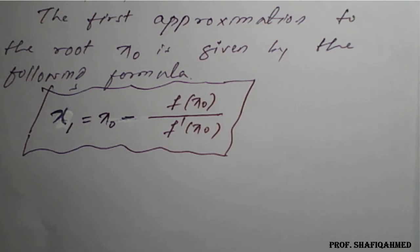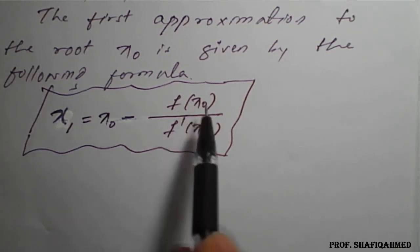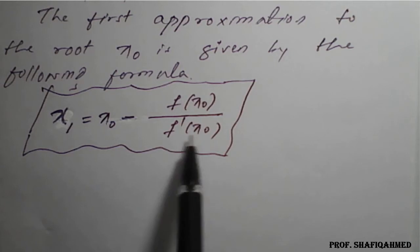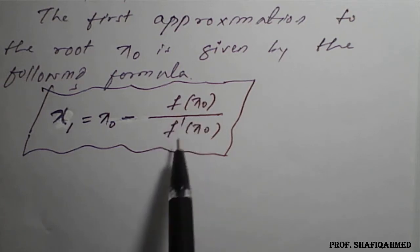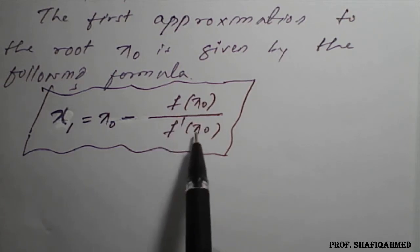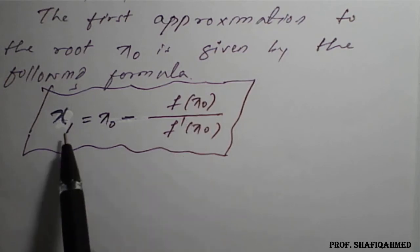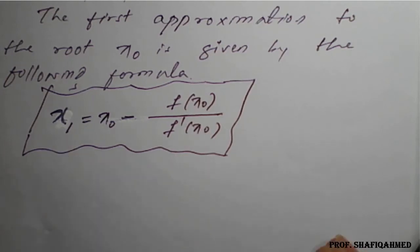From there, we collect this x₀ and apply it. Whatever f(x) function is there, we have to differentiate it. We apply the initial value to f(x) and its differentiation, and we will get the first approximation.